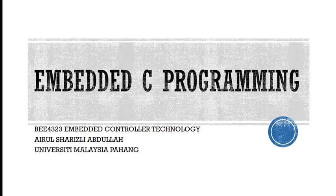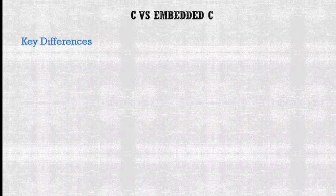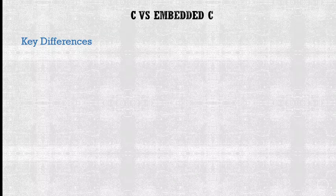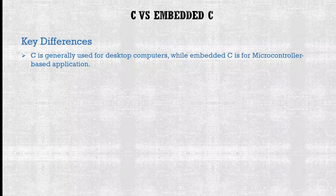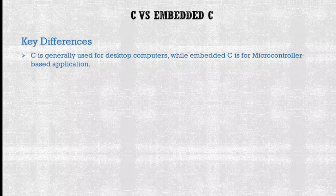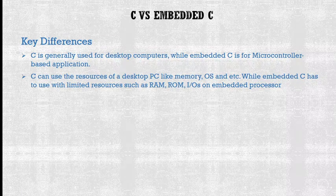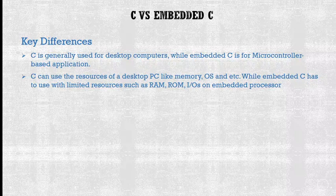What is exactly the difference between C and embedded C programming? The key difference is first: C is generally used for desktop computers, while embedded C is for microcontroller-based applications. Second, C can use the resources of a desktop PC like memory, operating system, etc., while embedded C has to work with limited resources.